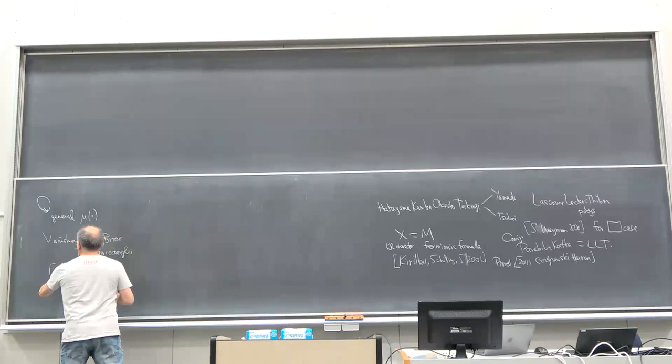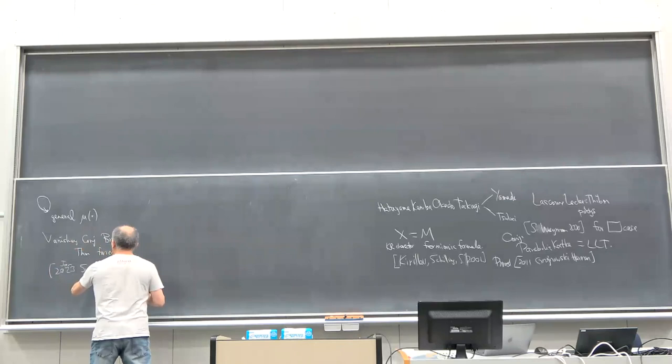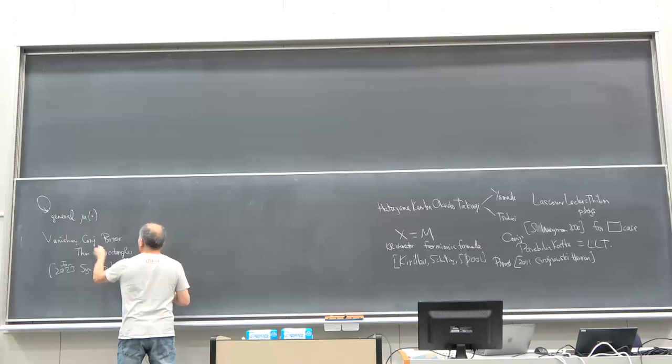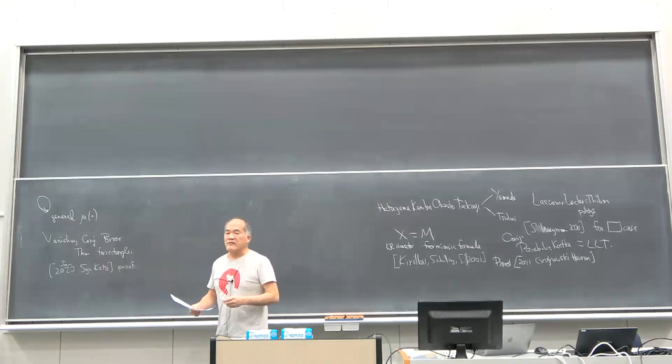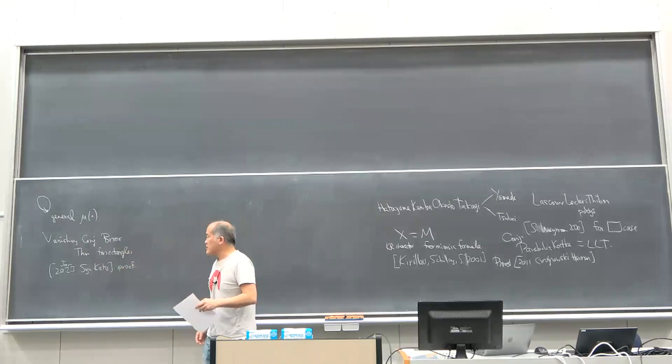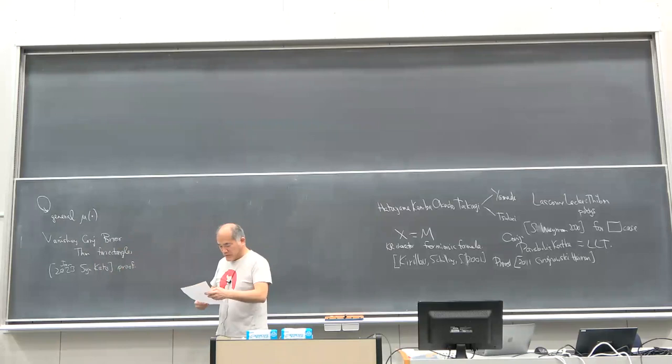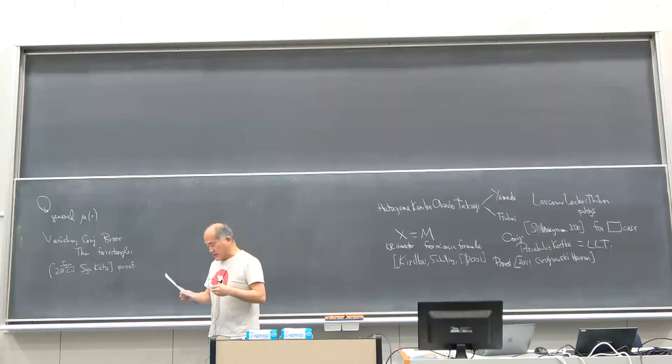In January 2023, Shu Kato announced a proof of this vanishing conjecture. He actually proved a bunch more — geometrically, by cohomology vanishing, he proved the positivity of these Catalan functions, which are more general than parabolic Kostkas. I talked to him yesterday evening trying to get details about how that went.